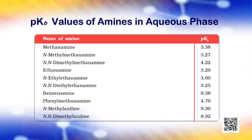The pKb value of ammonia is 4.75. Aliphatic amines are stronger bases than ammonia due to the +I effect, that is the positive inductive effect of alkyl groups, leading to high electron density on the nitrogen atom. Their pKb values lie in the range of 3 to 4.22. On the other hand, aromatic amines are weaker bases than ammonia due to the electron-withdrawing nature of the aryl group. Besides inductive effect, there are other effects like solvation effect and steric hindrance which affect the basic strength of amines.